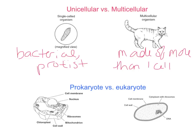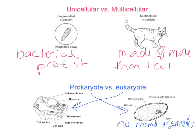Cells in a kingdom can be either prokaryotic or eukaryotic. A prokaryotic cell has no membrane-bound organelles — no mitochondria, no nucleus, no endoplasmic reticulum. A eukaryote will have all of that — it will have membrane-bound organelles.